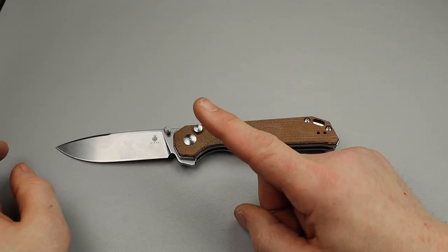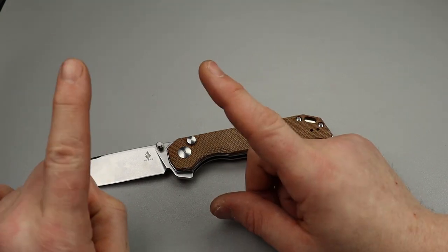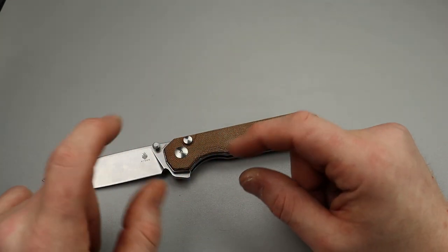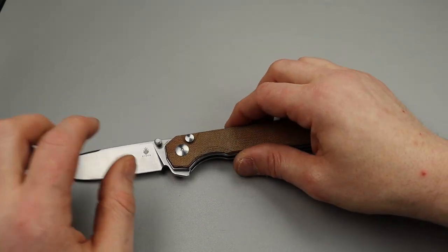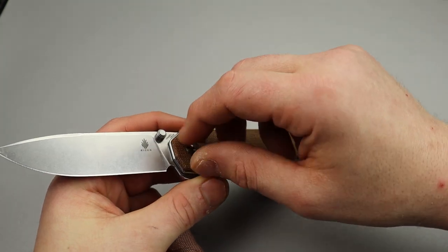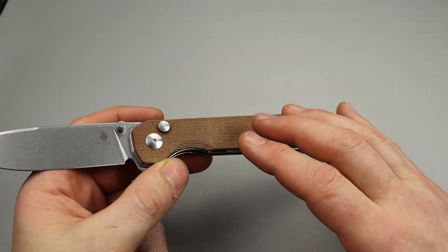So what you're going to want to do is get a T8 bit and driver, take out your screws, and also make sure you have Loctite. Loctite all the screws, put them back in, but do not screw them in tight. Just put the pivot in not all the way tight, just so that it's in. Same thing with this screw and this screw, put them all in but they're not tight.